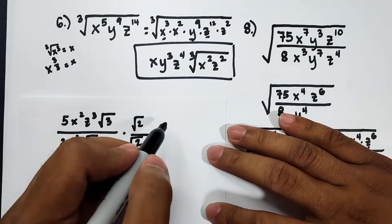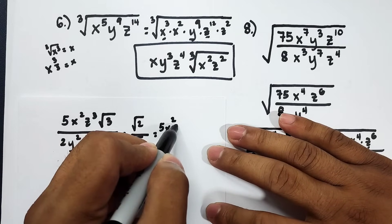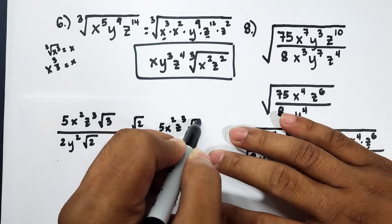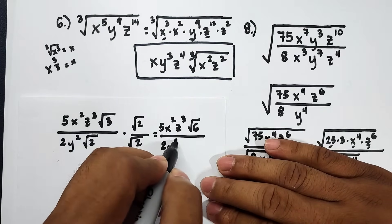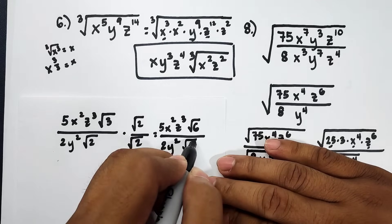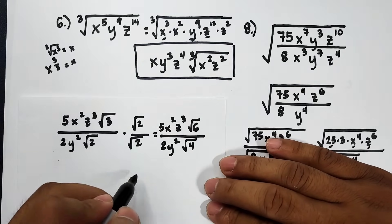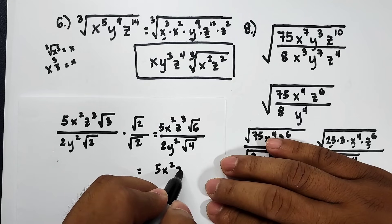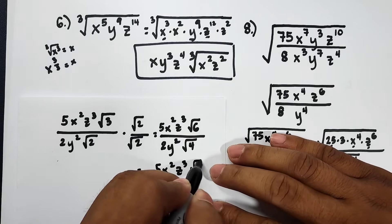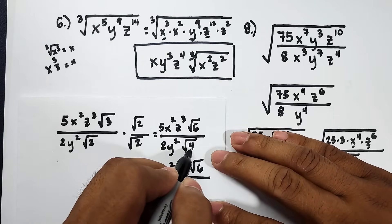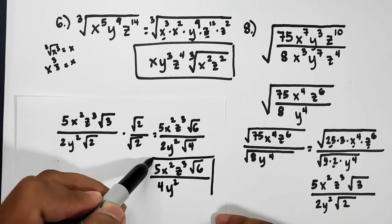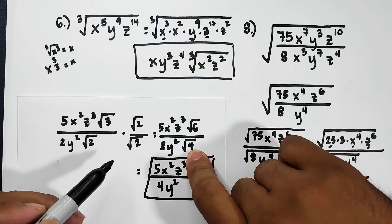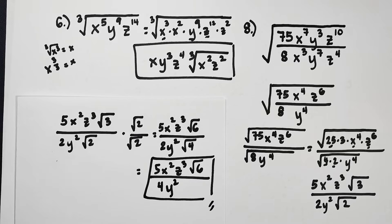After multiplying, the numerator becomes 5x²z³ times the square root of 6, because square root of 3 times square root of 2 is square root of 6. In the denominator, square root of 2 times square root of 2 is square root of 4, which equals 2. So the denominator becomes 2 times 2, which is 4, times y squared. The final answer is 5x²z³√6 over 4y².